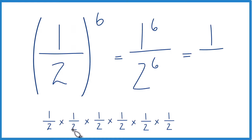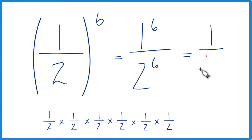Two to the sixth: two times two is four, four times two is eight, eight times two is 16, 16 times two is 32, 32 times two is 64.